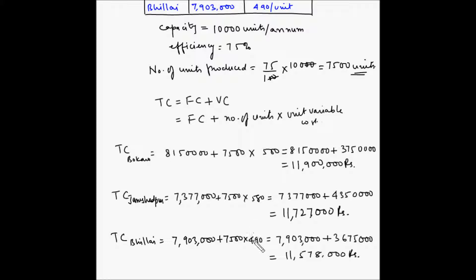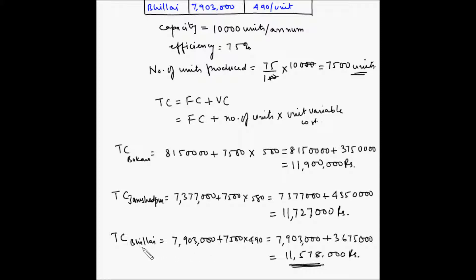Comparing the three total costs, Bhilai turns out to have the lowest total cost of production. Based on this break-even analysis, the preference would be to set up the manufacturing plant at Bhilai.